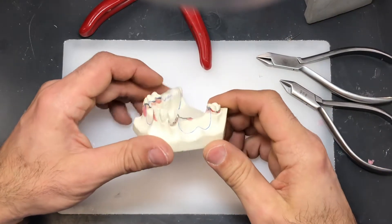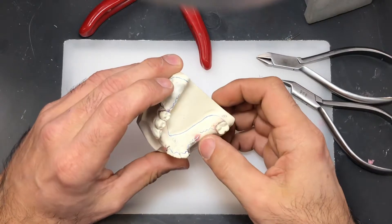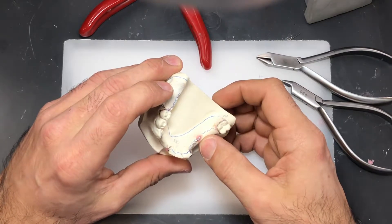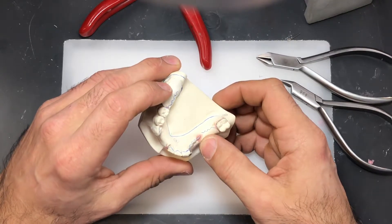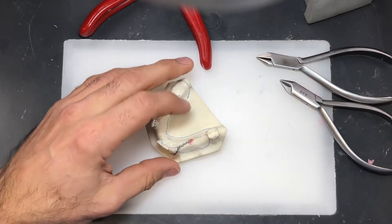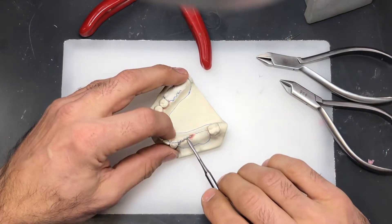Once you finalize your wire and you're happy with the fit, we're going to tag it with a little bit of wax. We're going to let that cool down and then we're going to remove our wire.